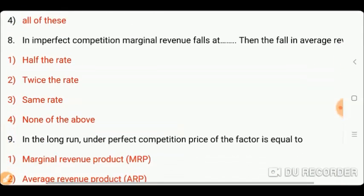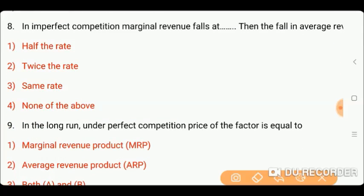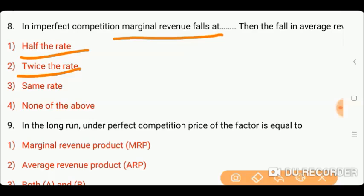Next question is: in imperfect competition, marginal revenue falls at dash rate compared to the fall in average revenue. Options: half the rate; twice the rate; same rate; or none of the above. Friends, the right answer is twice the rate — marginal revenue falls at twice the rate of the fall in average revenue.